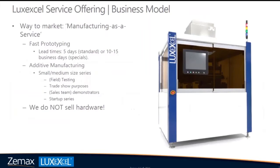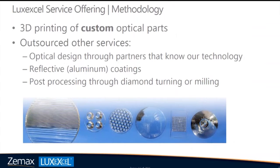These are the markets we currently serve, but we'll also try to help those operating in other markets. Our business model is manufacturing as a service. We offer fast prototyping with lead times of just five business days, and 10 to 15 business days for specialty products. We can also offer smaller series for field testing or trade show purposes — if you want to launch your product but don't have resources for tooling, we can 3D print the optical parts for demonstrators or startup series to get to market quickly.